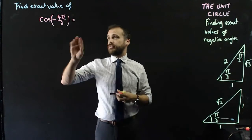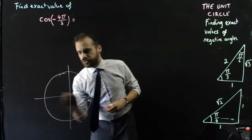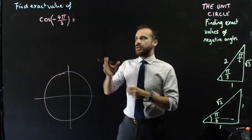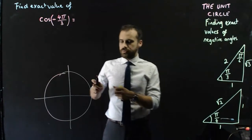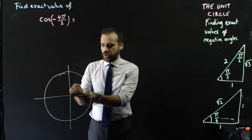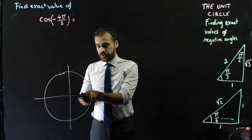So, we're going to find the exact value of cos(-4π/3). I'm going to draw a unit circle, because I always draw a unit circle when I'm doing this stuff. A negative angle just means that it's moving clockwise, not anti-clockwise, like all of the other angles we've done.